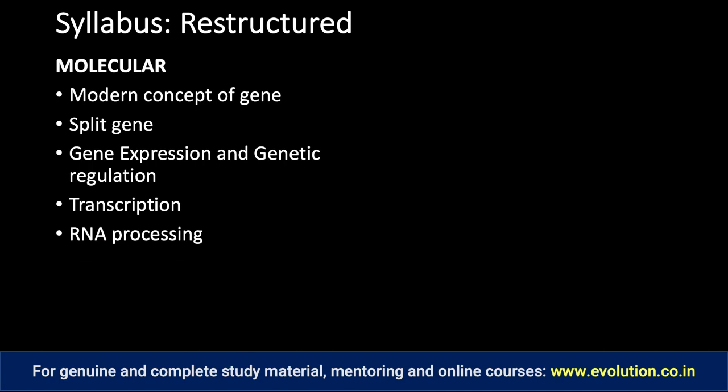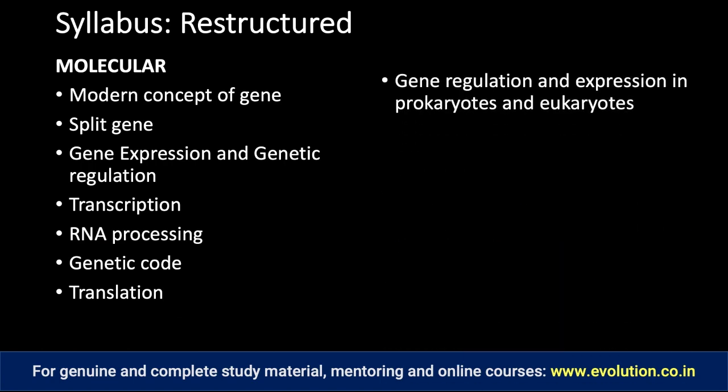Transcription and RNA processing were topics in the cell biology syllabus. I had told you we are going to do them in genetics — this is where they should be studied. In the original UPSC syllabus the very first paragraph mentioned genetic code, but genetic code should be studied just before translation. After studying genetic code, you should study translation. Then you are complete with gene expression and gene structure, and you should come to regulation of gene expression in both prokaryotes and eukaryotes separately.